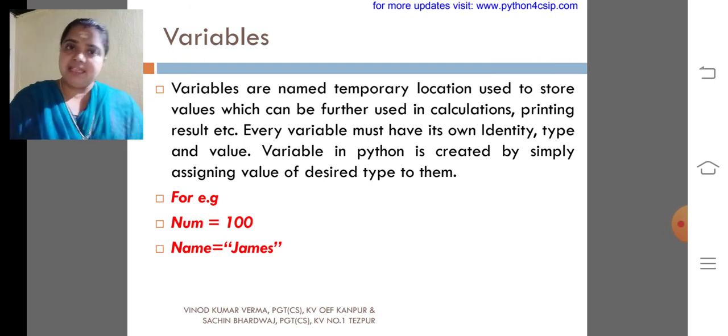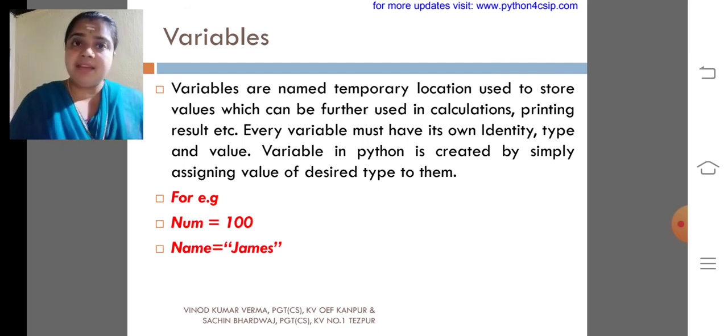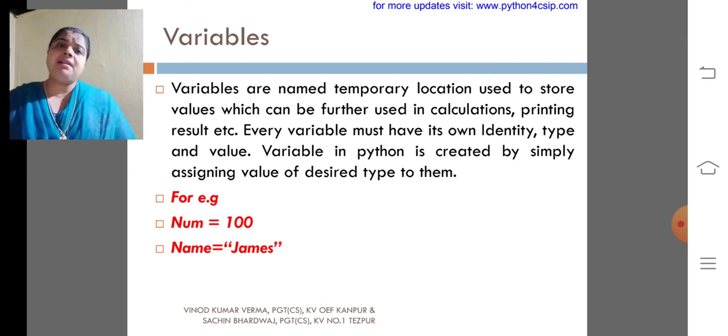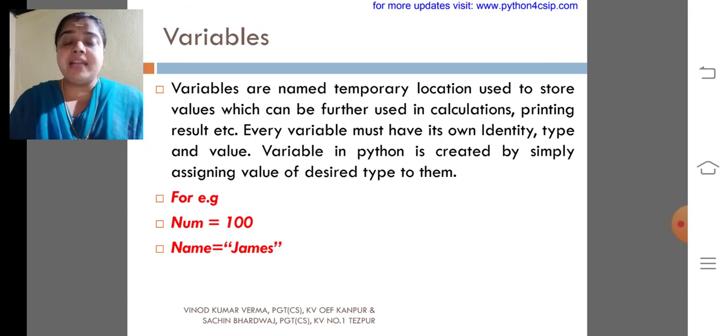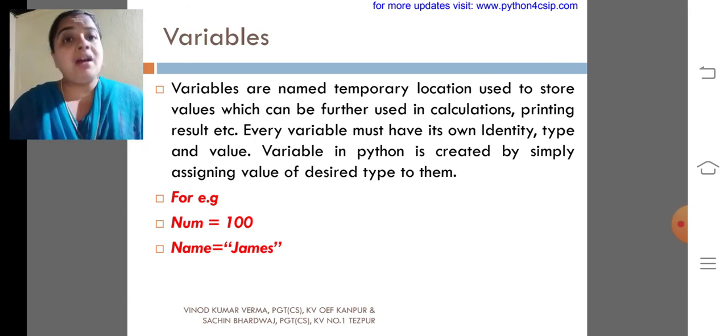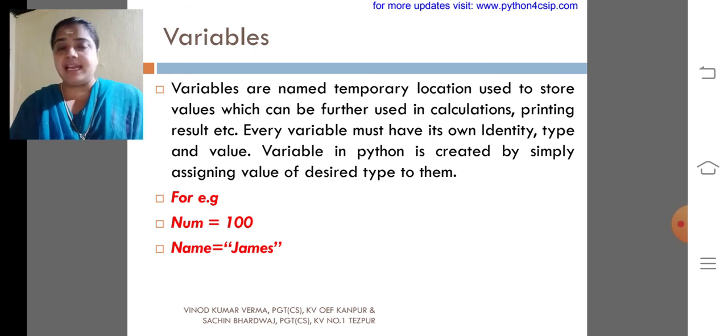Here we are going to discuss about the next very important object, that is nothing but the variable. About variables we had discussed more. Variables are named temporary locations used to store values which can be further used in calculation, printing, results, etc.